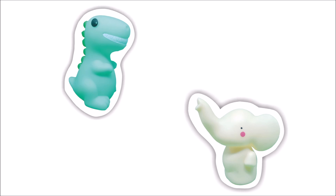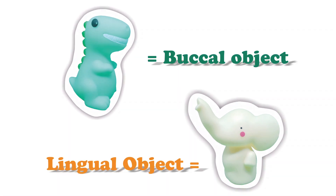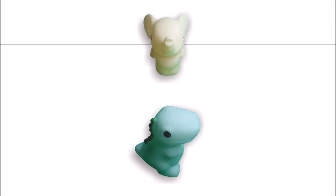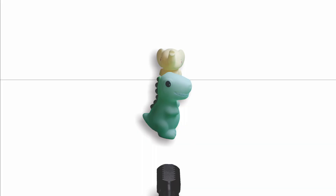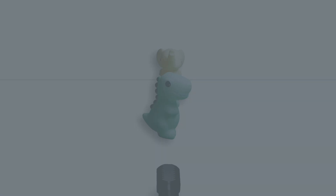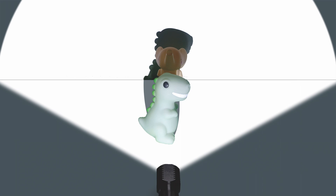Now we will have a little demonstration to explain the concept of the SLOB rule. We have two figures here — the dinosaur and the elephant. The dinosaur represents a buccal object, while the elephant represents a lingual object. We arrange their positions: since the dino is the buccal object, it is placed in front of the elephant, closer to the flashlight, while the elephant is closer to the screen. When we turn the flashlight on from a straight angle, the dino's shadow is superimposed on the elephant's shadow.